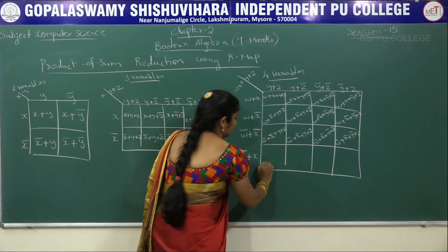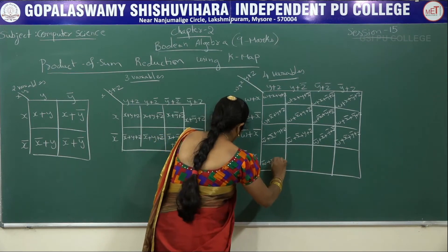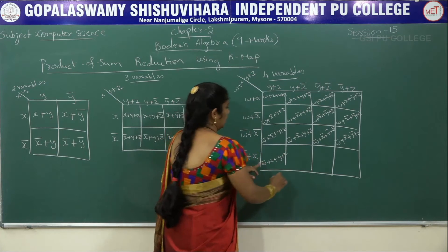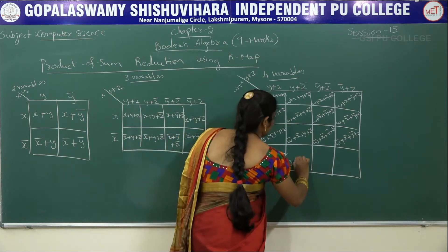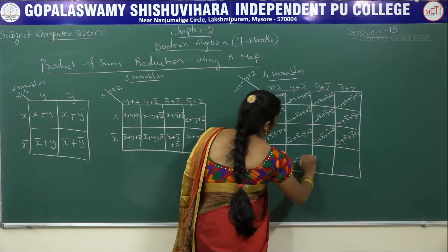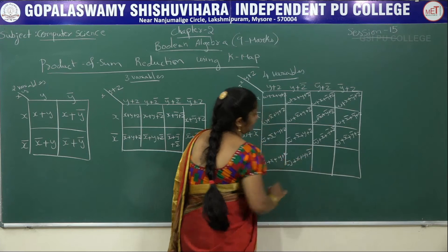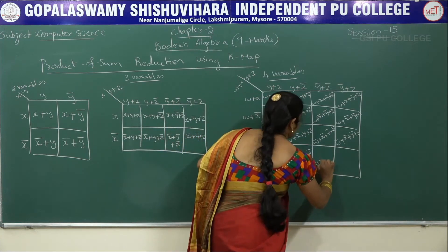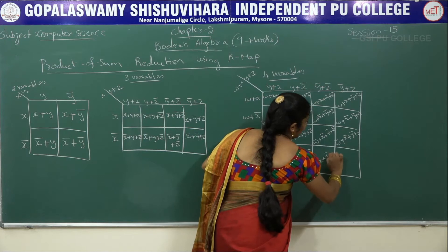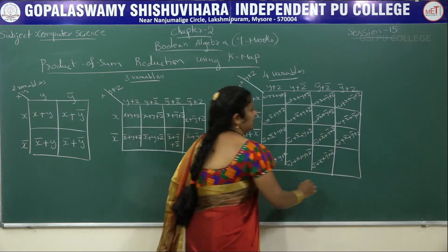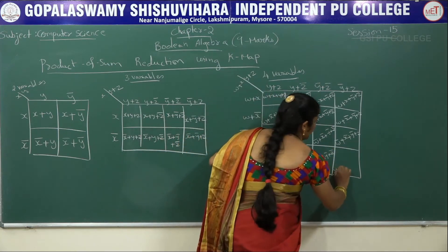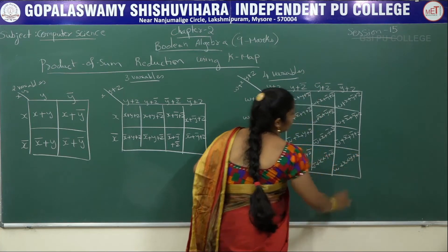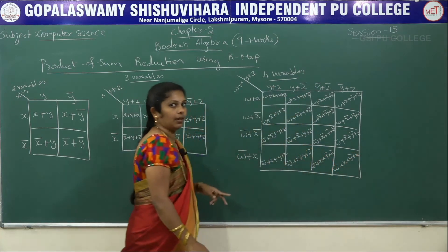For the last few cells: W bar plus X plus Y plus Z bar, W bar plus X plus Y bar plus Z bar. These complete the 4-variable maxterm K-map cell expressions.